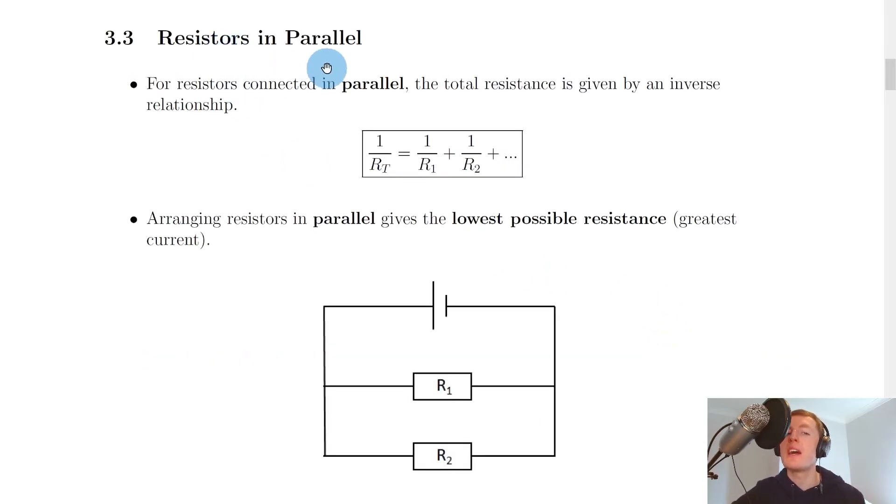Going back to the notes now, we have resistors in parallel. You should remember that for resistors connected in parallel, the total resistance is given by an inverse relationship, and by inverse we mean 1 over something. So here we have 1 over the total resistance, 1 over RT, is equal to 1 over R1 plus 1 over R2 plus dot dot dot.